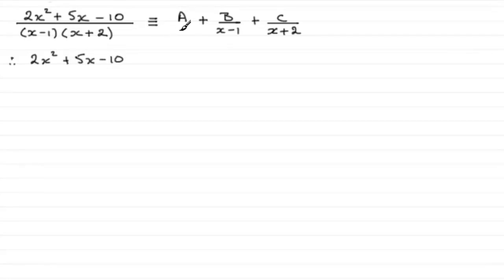And then for the a it's going to now be a multiplied by x minus 1 times x plus 2. When we get to the term with the b, the x minus 1 will get cancelled out and leave you with b times just the x plus 2. And for the last term we're just going to have c multiplied by x minus 1 because the x plus 2 will get cancelled.